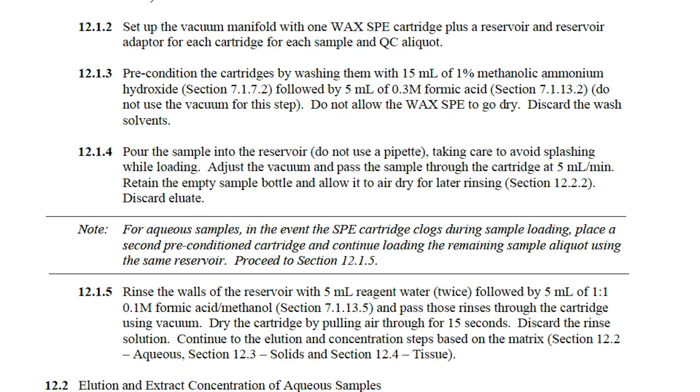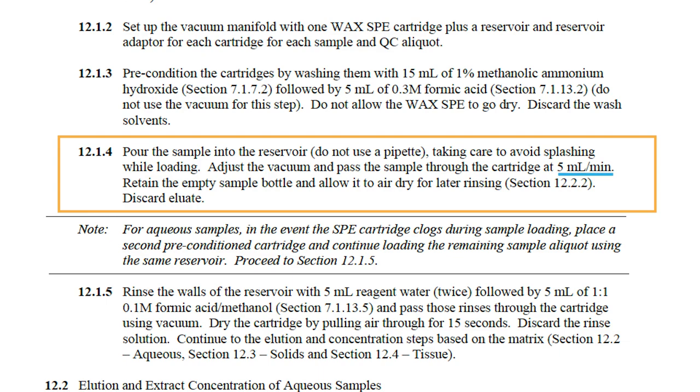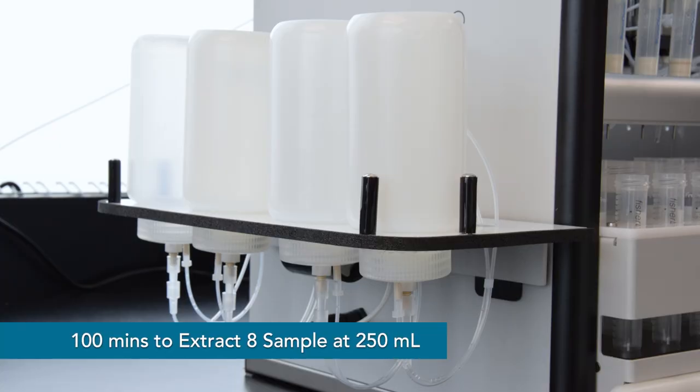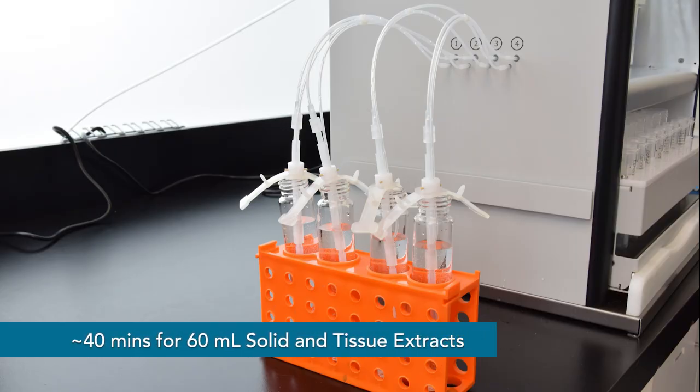That really depends on the sample volume and flow rate. Based on the 5 milliliter per minute sample loading speed prescribed by draft method 1633, it will take the SPE03 just under 100 minutes to extract all eight samples at 250 milliliters. For 60 milliliter solid and tissue extracts, it will only take about 40 minutes. Sample loading speed is something that can be optimized, and we have seen good results even at 8 milliliters per minute, which further reduces the extraction time by 20 minutes.